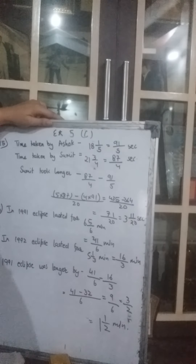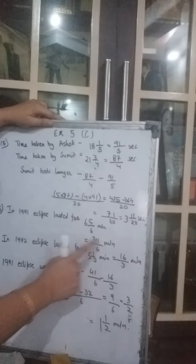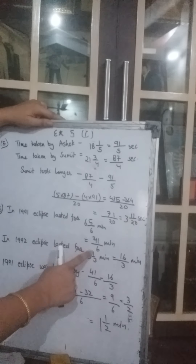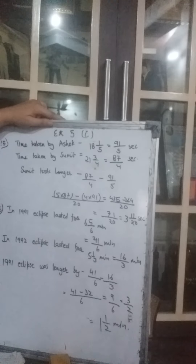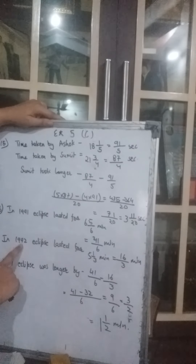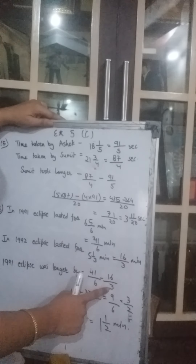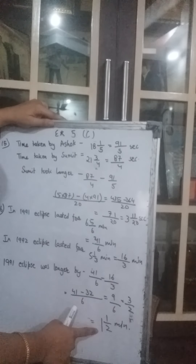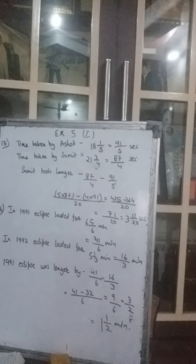Now the 16th question. The two largest solar eclipses occurred in 1991 and 1992. In 1991 the eclipse lasted 6 whole 5 upon 6 minutes, equal to 41 upon 6 minutes. In 1992 it lasted 5 whole 1 upon 3 minutes, equal to 16 upon 3 minutes. How much longer was the 1991 eclipse? They are already telling us 1991 was longer. So 41 upon 6 minus 16 upon 3: take the LCM and the answer is 1 whole 1 upon 2 minutes. With this we come to the end of this exercise and this chapter.